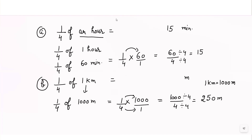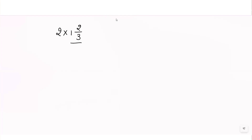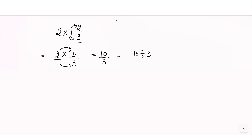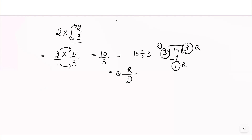Now let's learn how to multiply a whole number with a mixed fraction. The question is 2 into 1²⁄₃. First, convert the mixed fraction to an improper fraction: 3 × 1 + 2 = 5, so it becomes 5/3. Below 2 no denominator is given, so it's 2/1. Multiply to get 10/3. Since the question had a mixed fraction, the answer should also be in mixed fraction form. Dividing 10 by 3: quotient is 3, remainder is 1, divisor is 3 — so the answer is 3¹⁄₃.